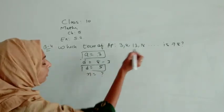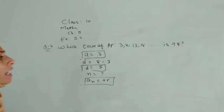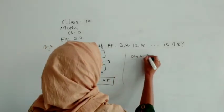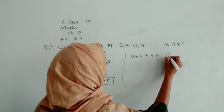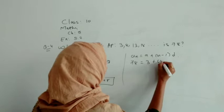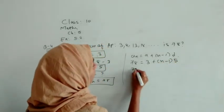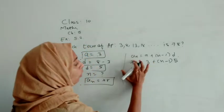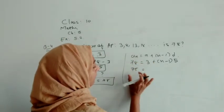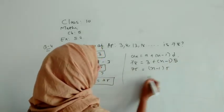Now n is question mark and an is given as 78. But which term will have the answer 78? Let us do the process. So an is equal to a plus (n minus 1) times d. An we will write as 78, a is 3, and we are now knowing difference is 5. So it will become 75 because 3 will go here. 78 minus 3 will make 75.